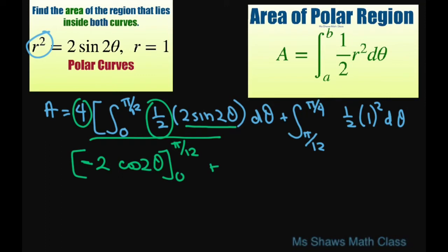And then for this piece, we're going to get 2θ. And we're evaluating this from π/12 to π/4. This was all times 4. So I just took a half of 4 is 2. So there's where the 2 is coming from.